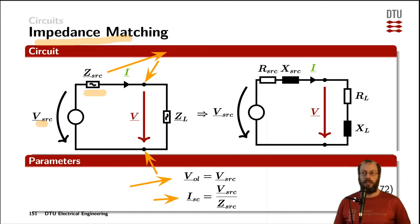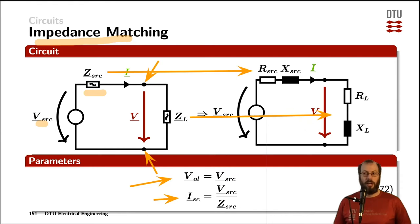Now, replacing the source impedance with the source resistor in series with the source reactance, and doing the same for the load — having a load resistance and a load reactance — we can use this circuit diagram to impedance match for optimizing various parameters: the voltage across the load, the current through the load, the total power delivered to the load, or the power factor delivered by the source.